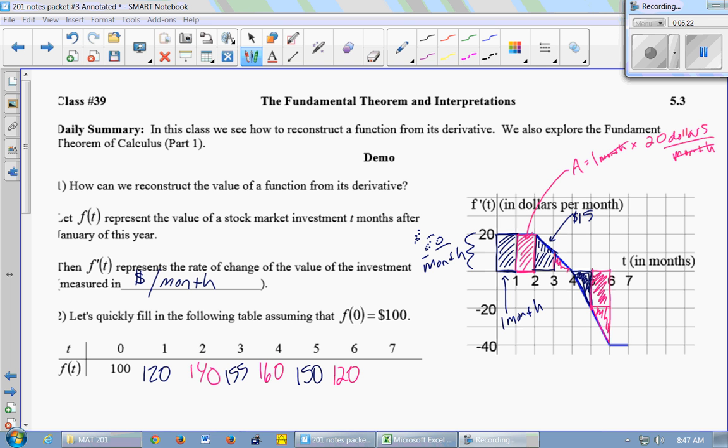And then in my last month, month 6 to month 7, big loss. The area of that rectangle is 40. 120 minus 40 is $80.